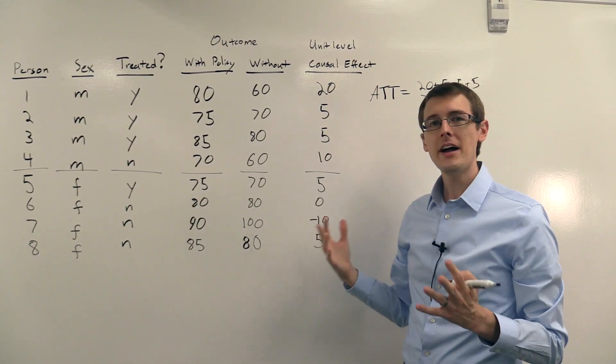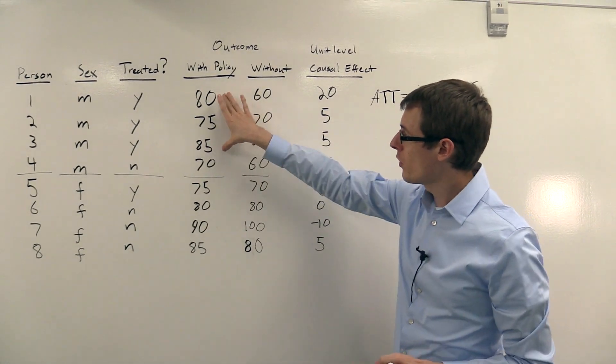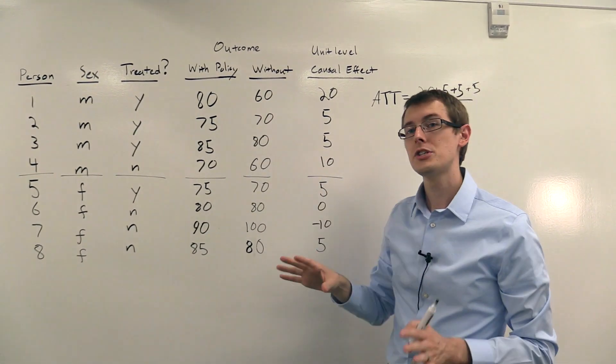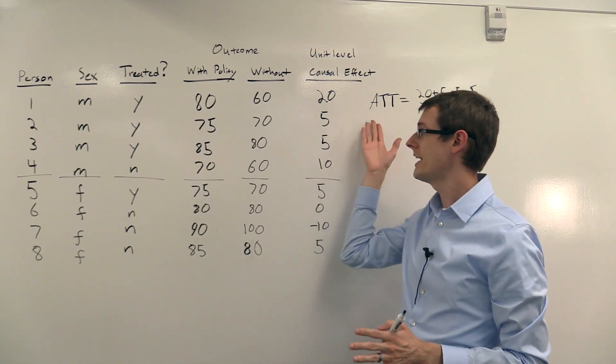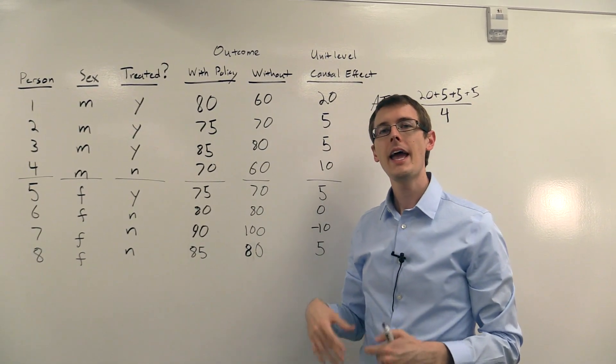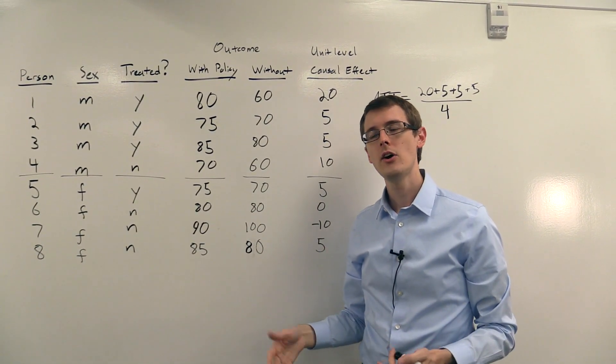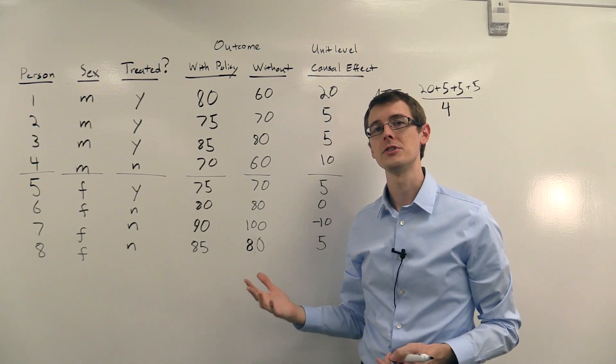Now under the unconfoundedness assumption or other assumptions, even though you don't observe both of these columns, you're still going to be able to compute this number, ATT, from your data, and as well as ATE, or CATE, or other parameters of interest.